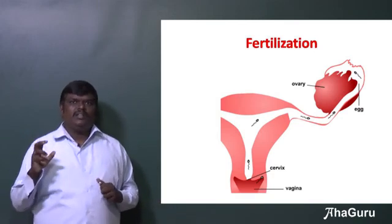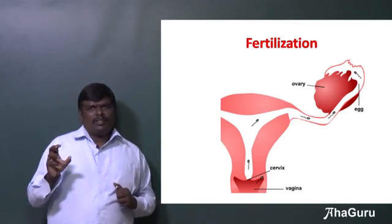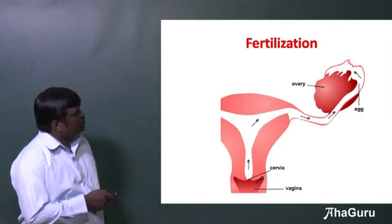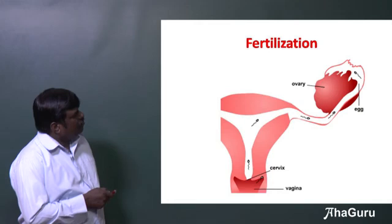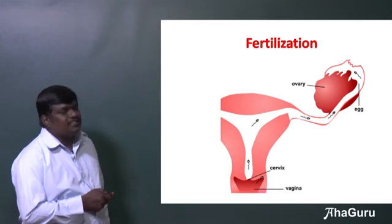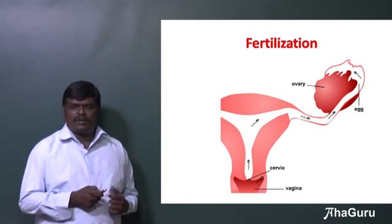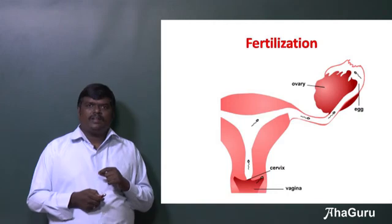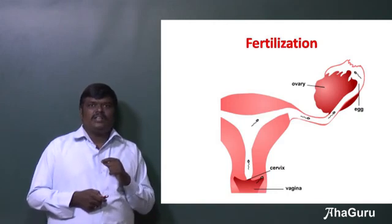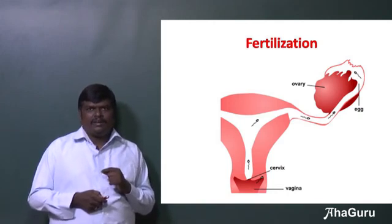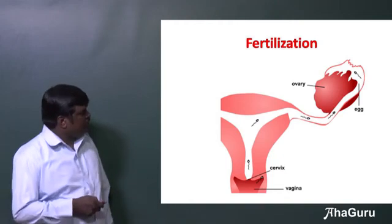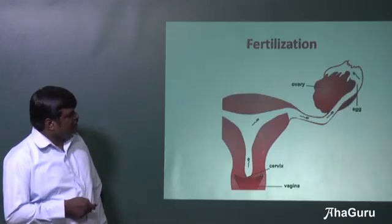Usually, the ovum, which is produced from the ovary — this part is called the ovary — an egg cell is formed there and released from the ovary. And the sperm, which is the male gamete, it fertilizes that.